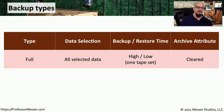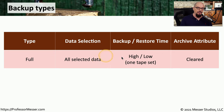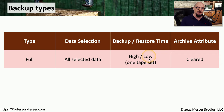Let's summarize all three of these backup types. On a full backup, we are backing up all data on the system. The process is going to take quite a bit of time because we're backing up everything on the system, but restoring this data only requires the single set of backup tapes.